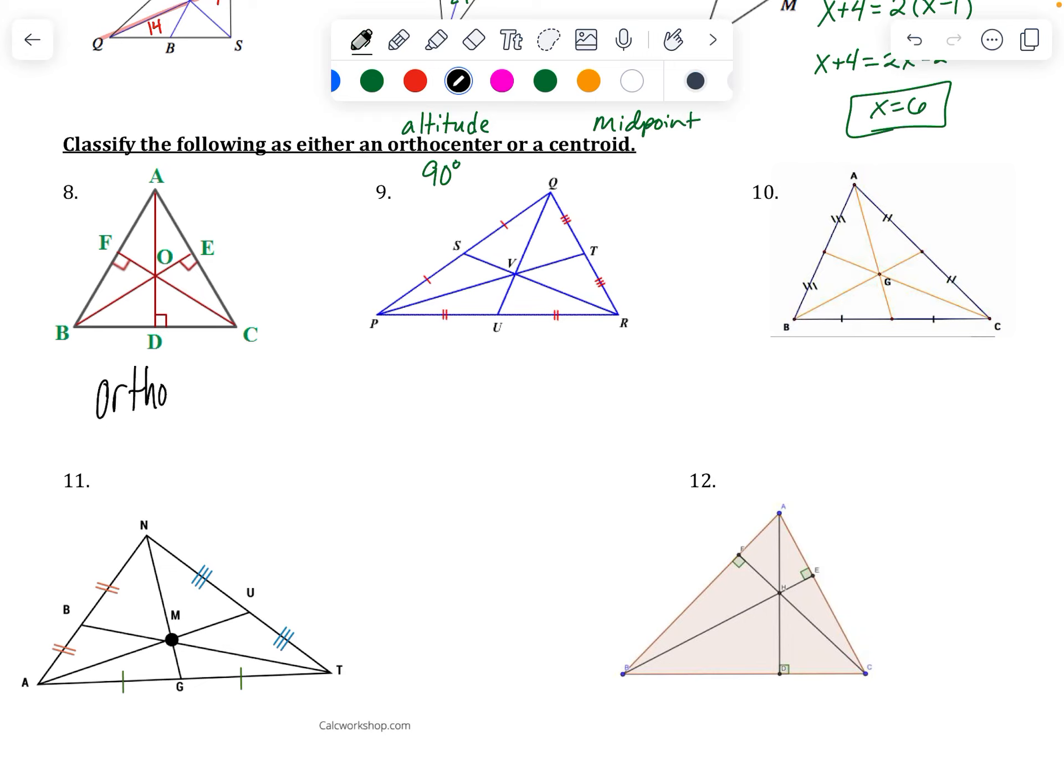Okay, so this should be the orthocenter because I've got 90-degree angles. This should be a centroid because I've got midpoints. This is a centroid because I've got midpoints. This is a centroid because I've got midpoints. And then I've got an orthocenter for altitudes on the last one.